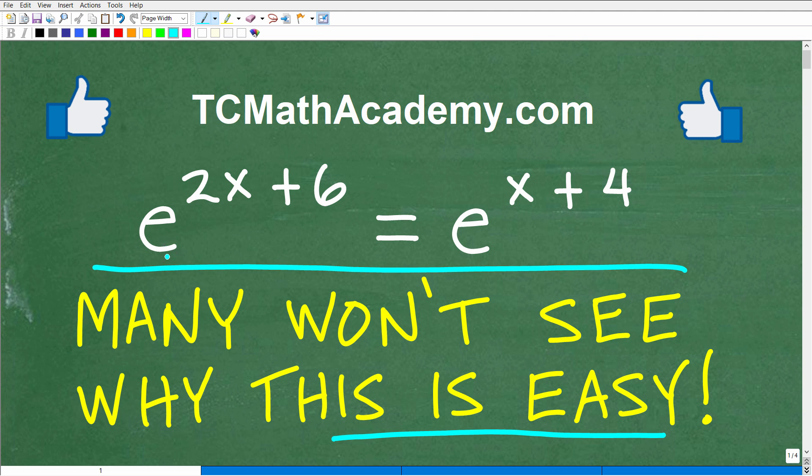So the equation is e to the 2x plus 6 power is equal to e to the x plus 4 power. And the objective here is to solve for x.